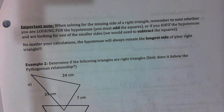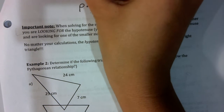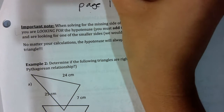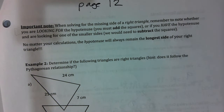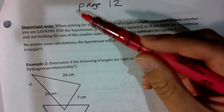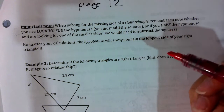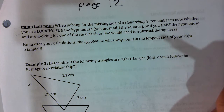We are on Unit 1, the Pythagorean Relationship, of your Math 8 booklet. We are on page 12, so you can turn to page 12 — it will continue our lesson for 3.4. With a highlighter, pen, or pencil, you are going to highlight what I highlight.